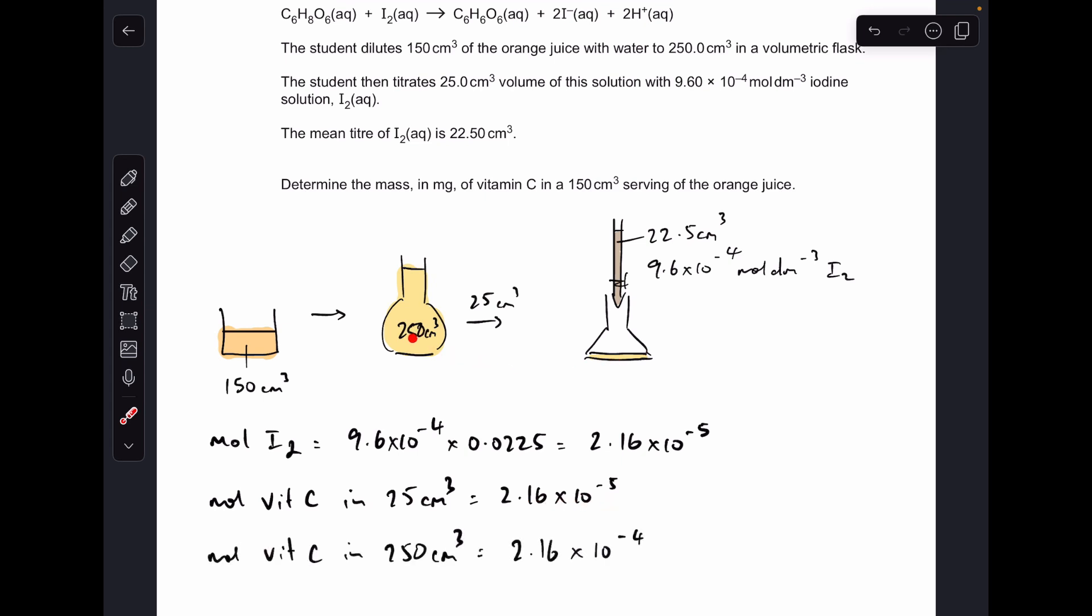To go from here to the volumetric flask, the moles in the volumetric flask—that's 10 times 25, so it's just 2.16 times 10 to the minus 4. The moles of vitamin C in here came from the 150, so basically that 2.16 times 10 to the minus 4 is also the moles in here.